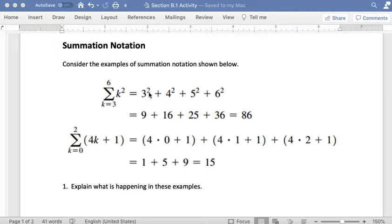So here I have 3 squared because my formula is k squared. This one is 4 times k plus 1, so 4 times 0 plus 1. And you can see that we are plugging in the bottom number. Then we are plugging in each whole number until we reach the top number. So this first one goes 3, 4, 5, 6.